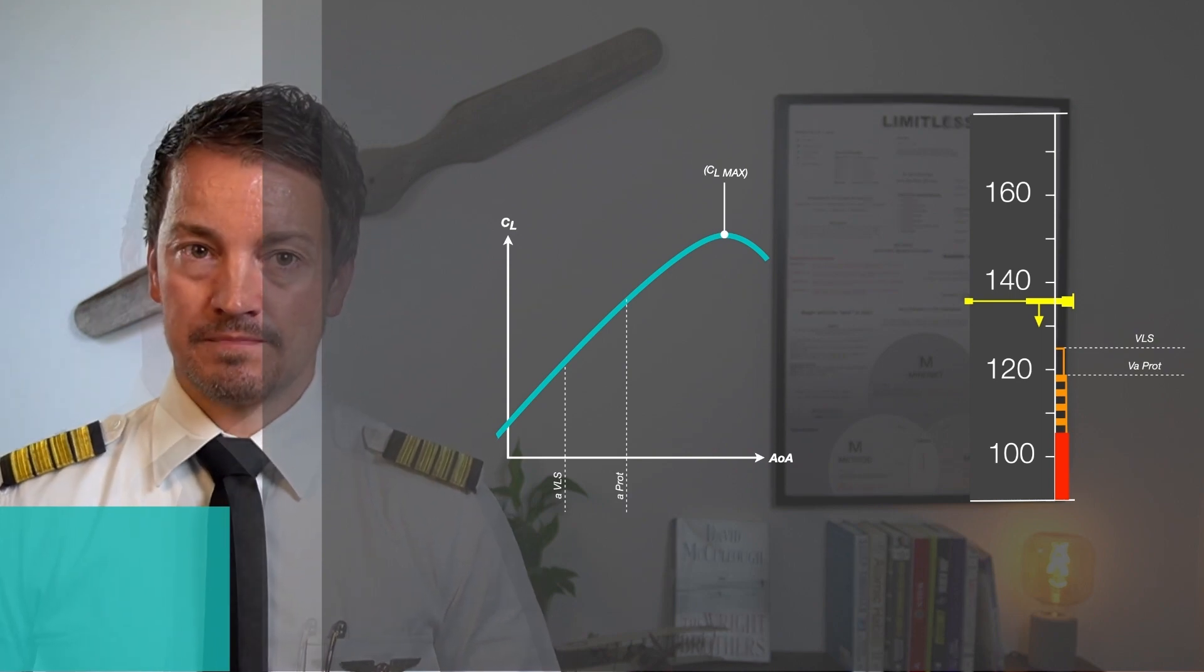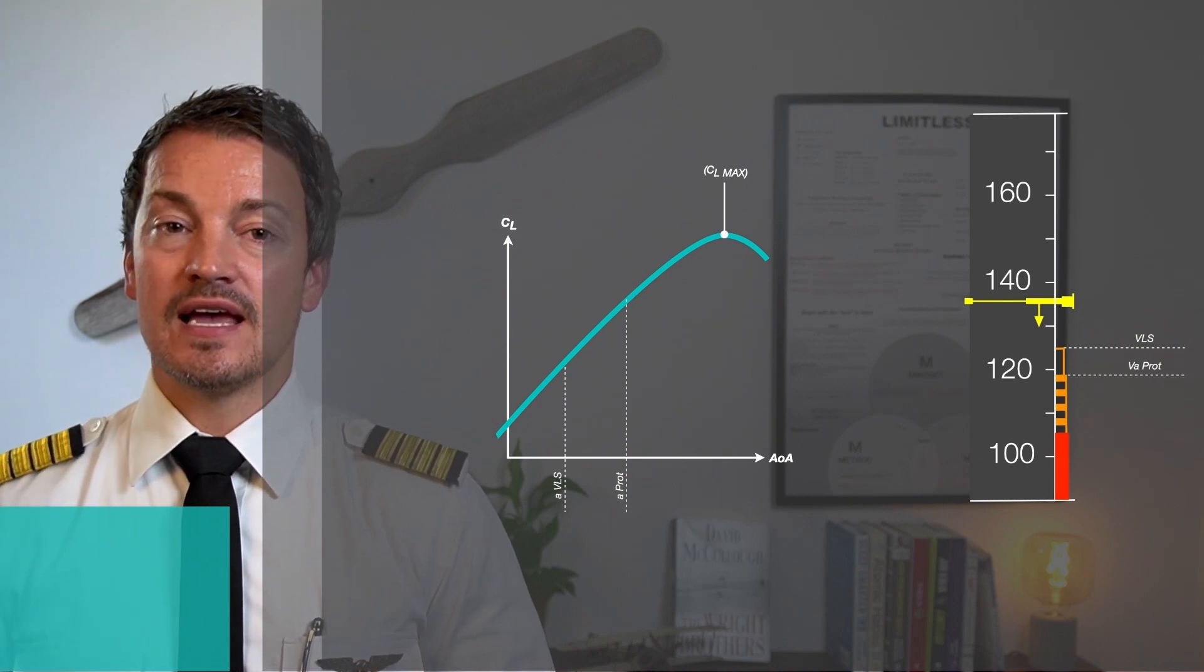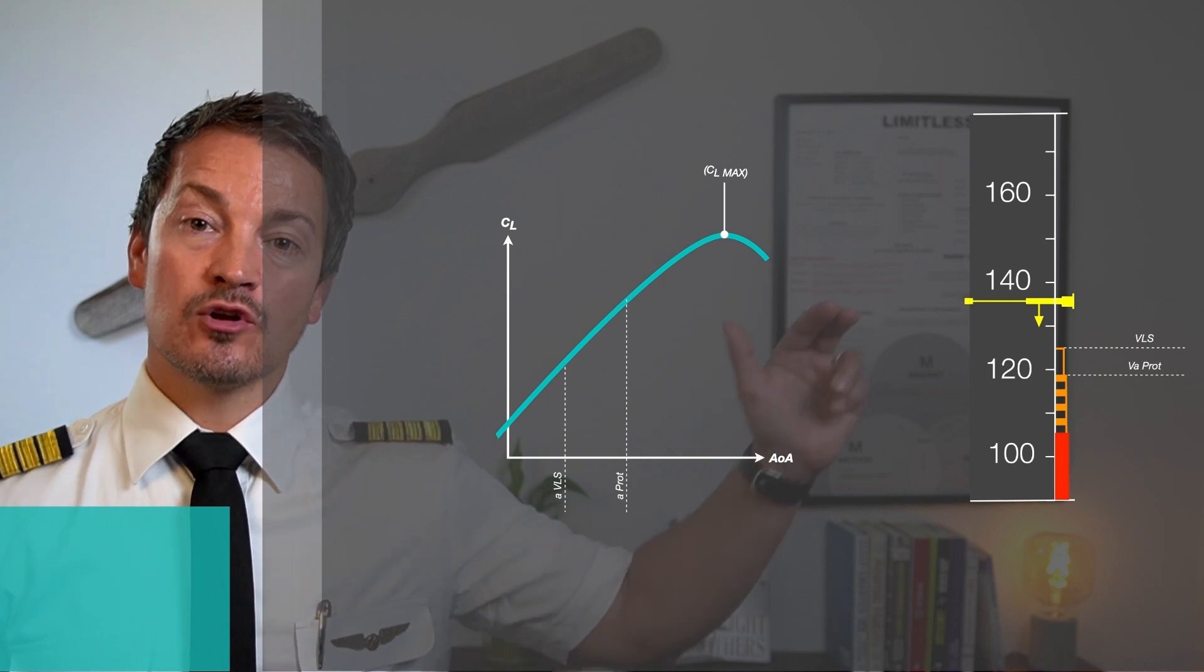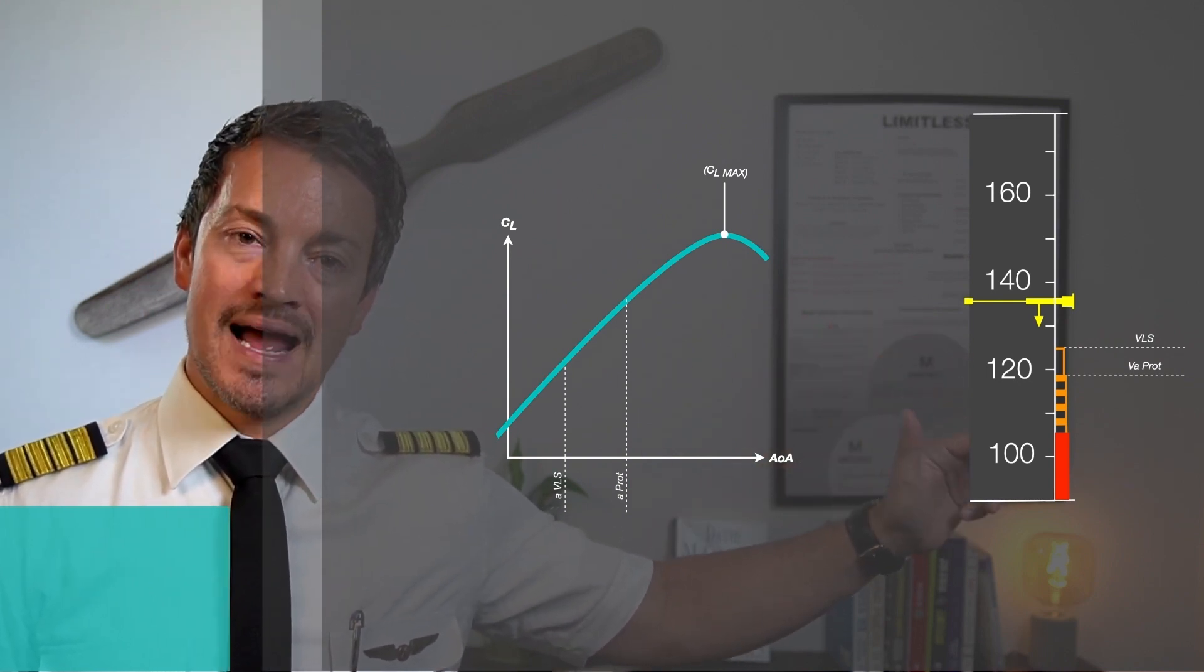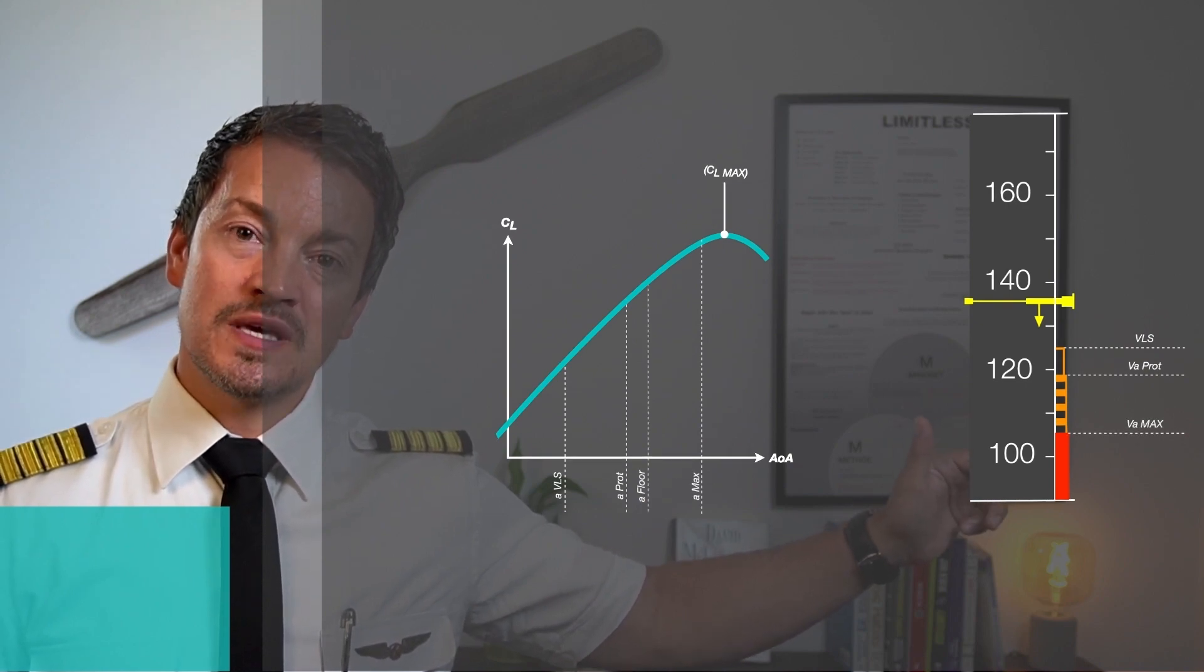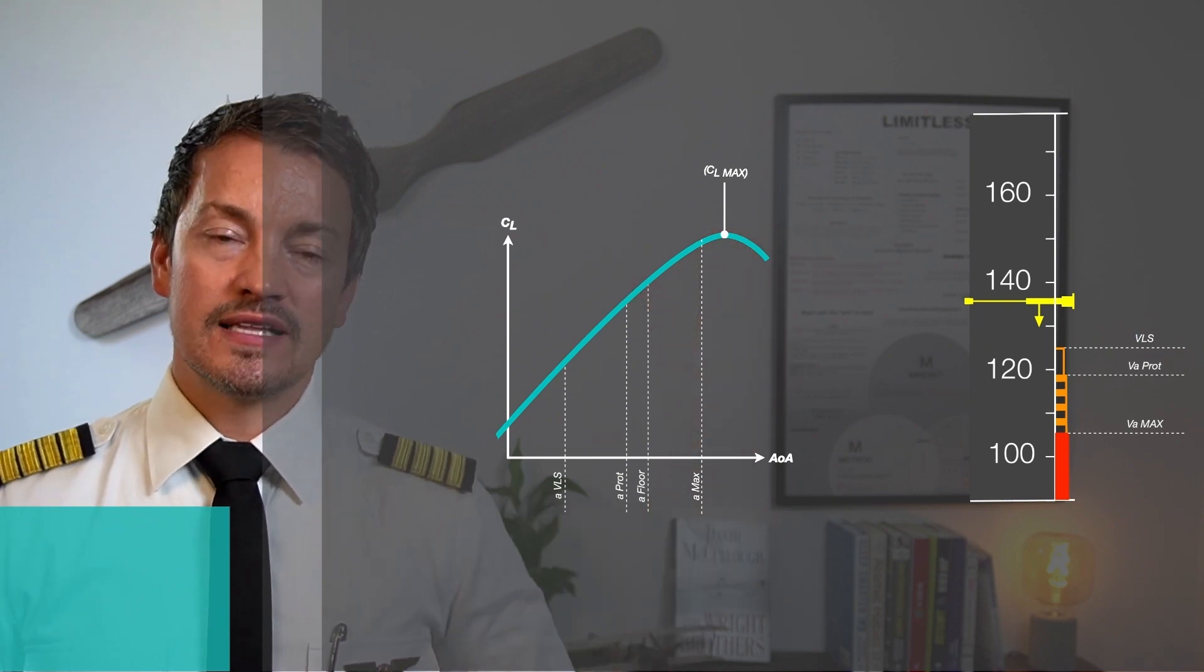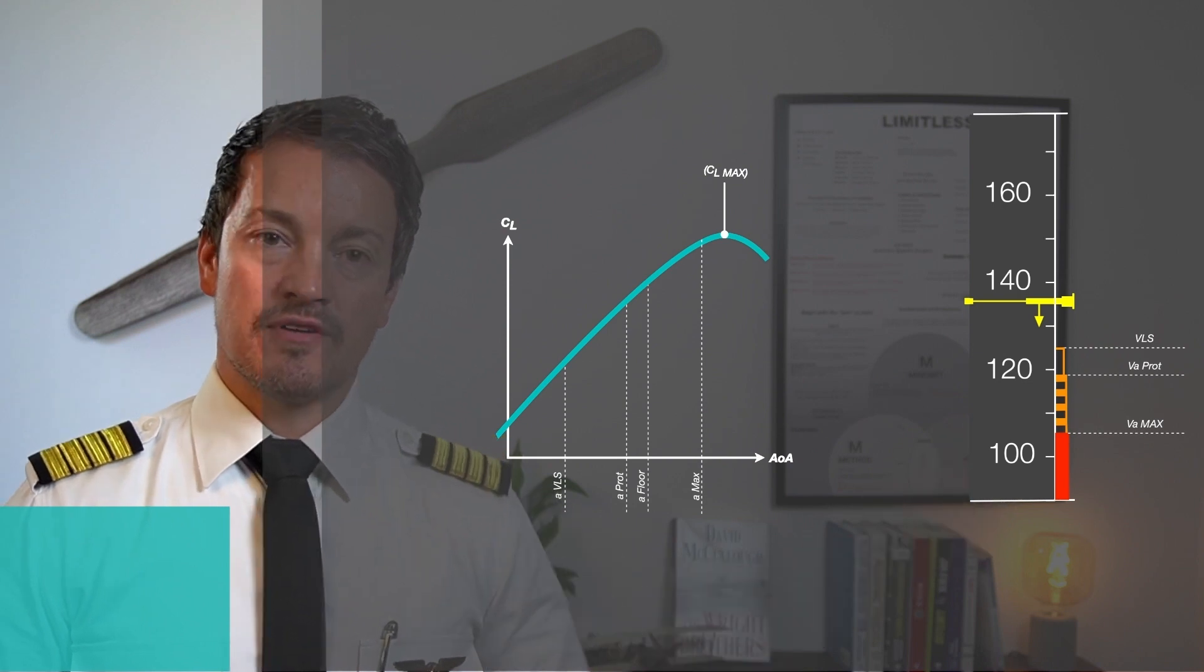If I were to hold the nose up by having a continuous side stick deflection backwards, then the speed can go all the way down to and hit what we call V-alpha max. V-alpha max is the lowest speed with the smallest margin to the actual stall that the aircraft can maintain.